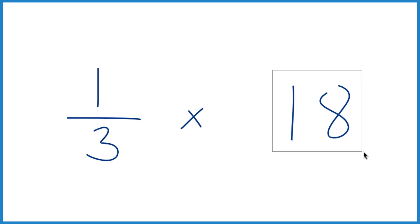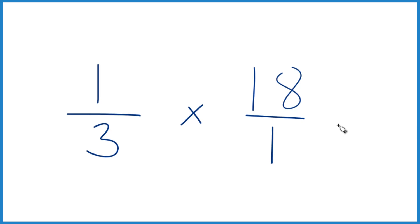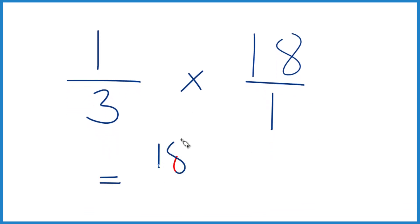And instead of 18, what I'm going to do is put it over 1. We're just dividing by 1, so it's still 18. So 1 times 18 equals 18, and 3 times 1 equals 3.